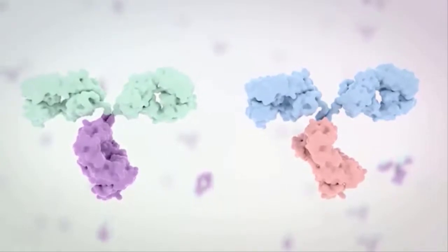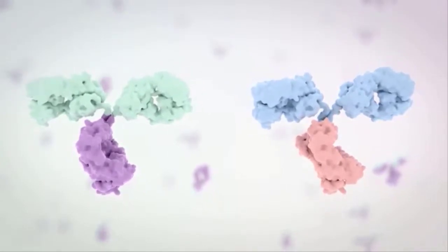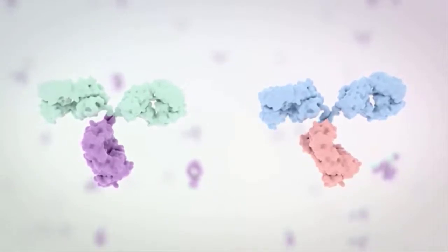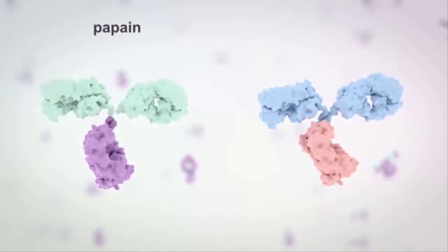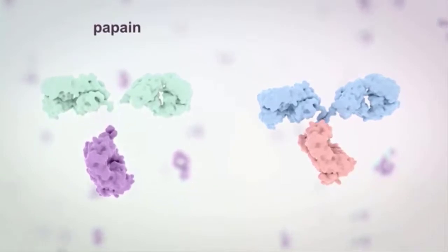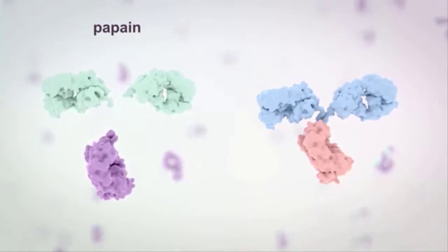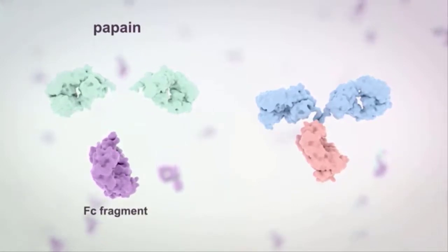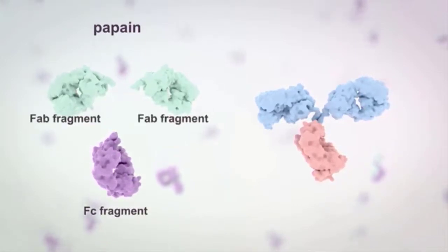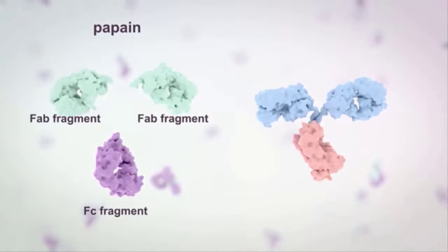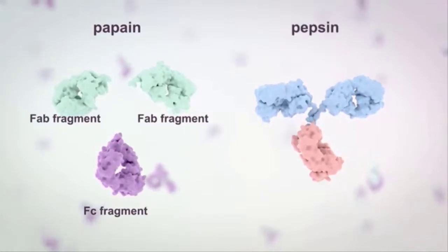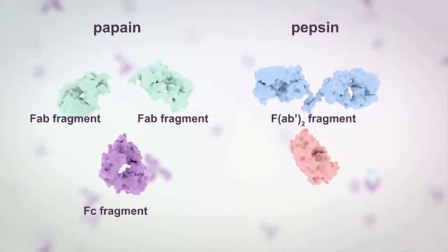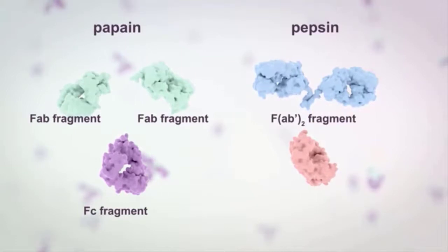A second way of classifying antibody structural regions is based on cleavage by proteolytic enzymes. The enzyme papain cleaves just above the disulfide bonds within the hinge region, leading to an Fc fragment and two Fab fragments. Another proteolytic enzyme, pepsin, cuts just below the disulfide bonds within the hinge region, giving a single F(ab')2 fragment with two arms still connected.